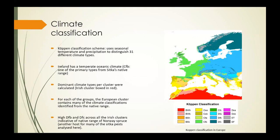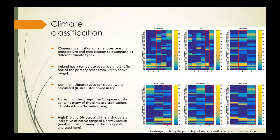This classification scheme uses seasonal temperature and precipitation to distinguish 31 different climate types. It's one of the most widely applied climate classification schemes, probably because it's generally accepted for the ecological relevance of the classifications. As you can see from the map, Ireland has a temperate oceanic climate (Cfb), which is one of the primary types from Sitka's native range, not entirely surprising considering that we grow it so well here.